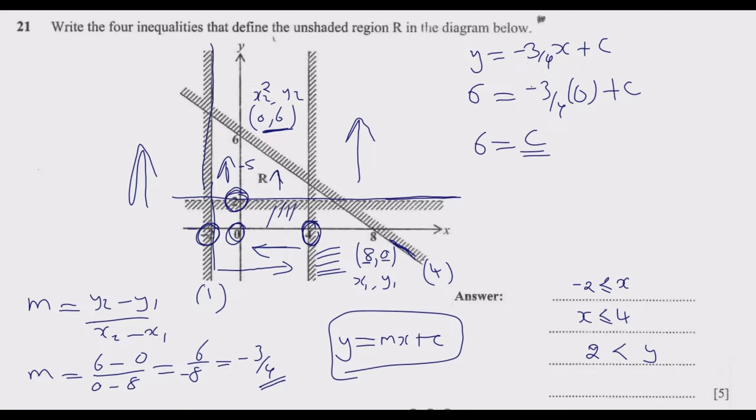C is equal to 6. Therefore, this equation becomes Y equals minus 3 over 4 X plus 6. That's what the equation becomes.